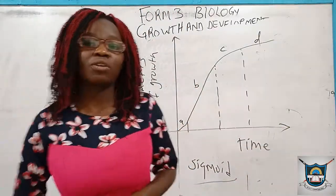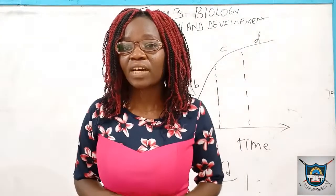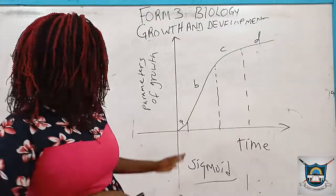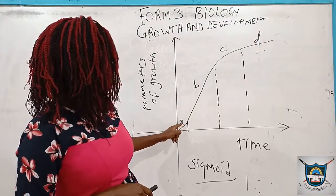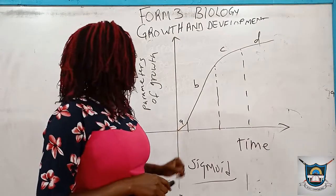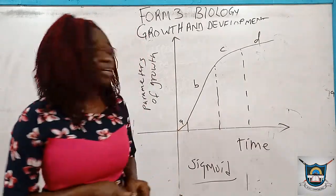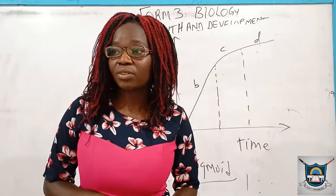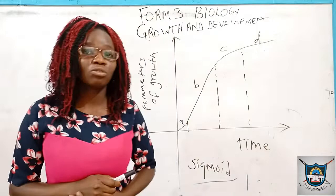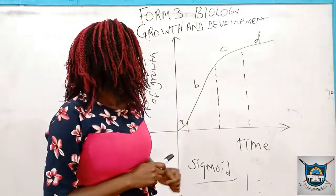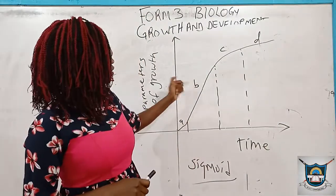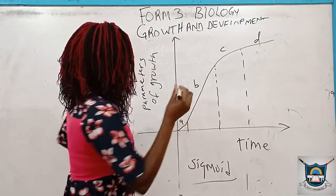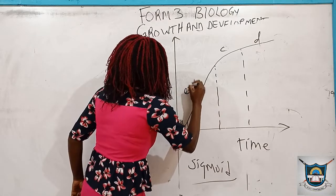So this curve is called a sigmoid curve. If we take the parameters of growth and plot them, we will get such a curve, which is due to various factors. The first phase A is due to the rate of growth being very slow because of various factors.